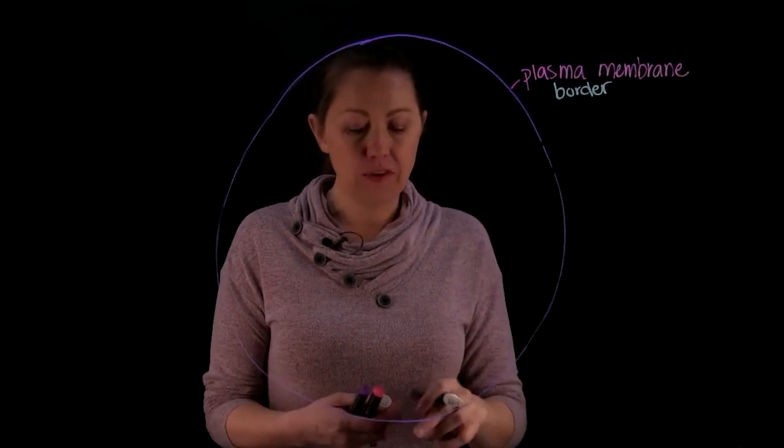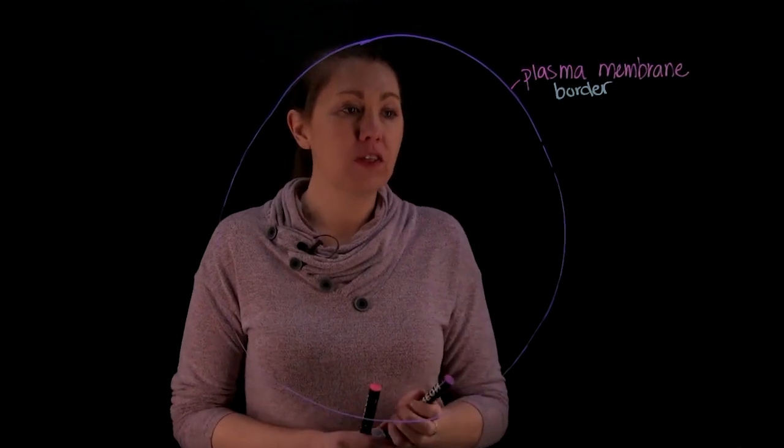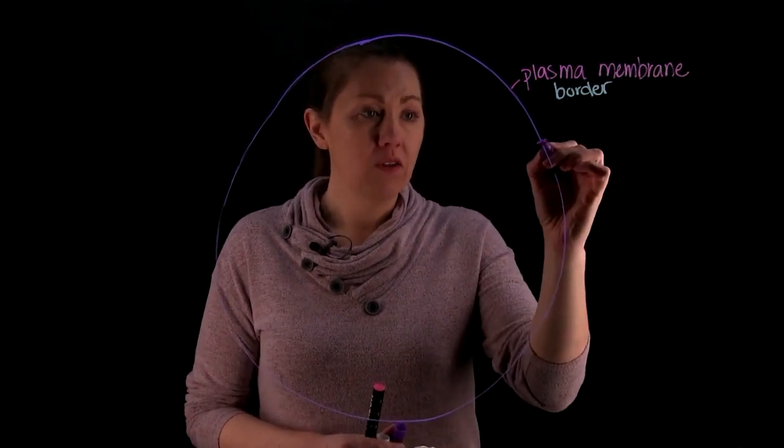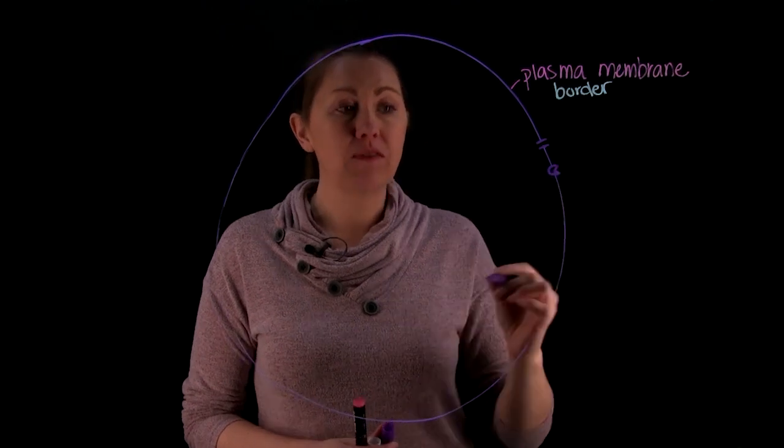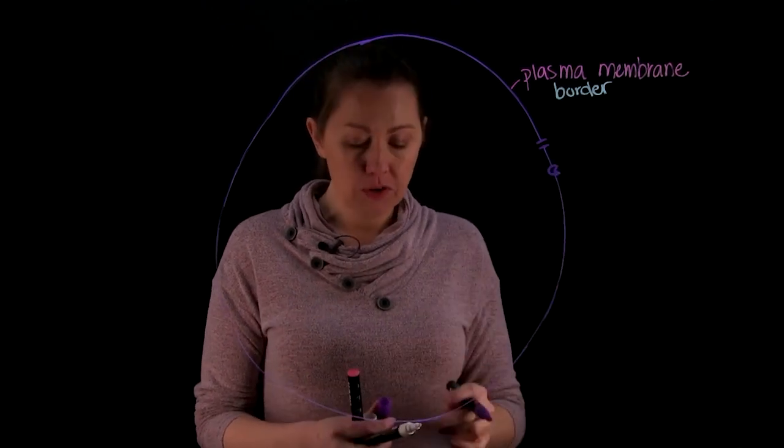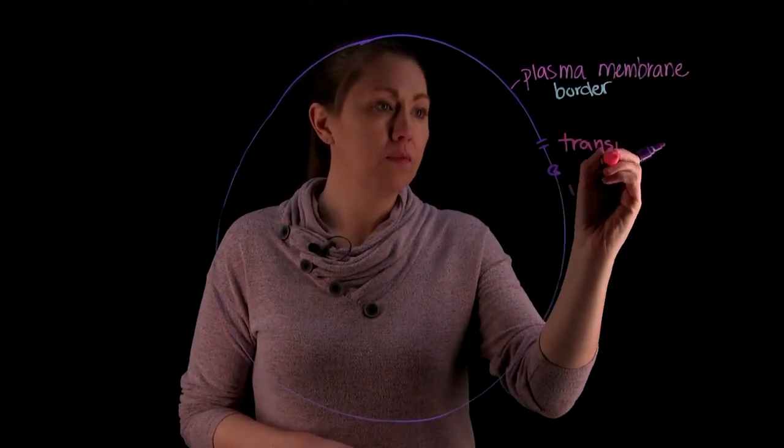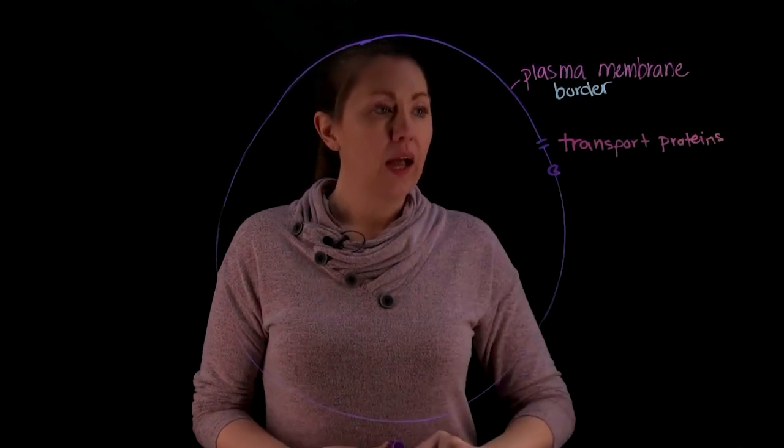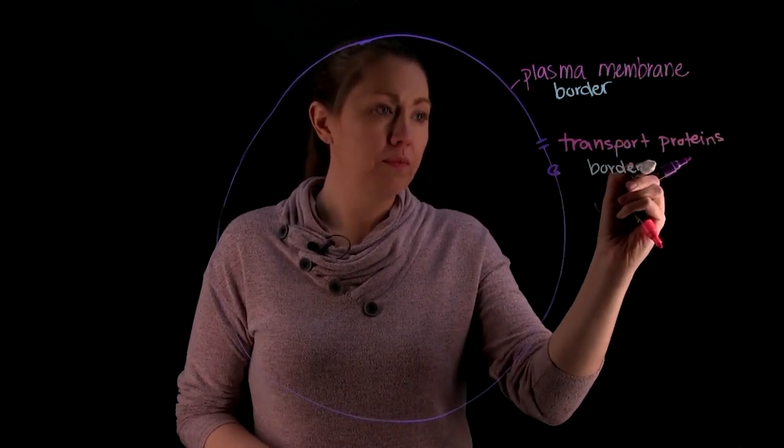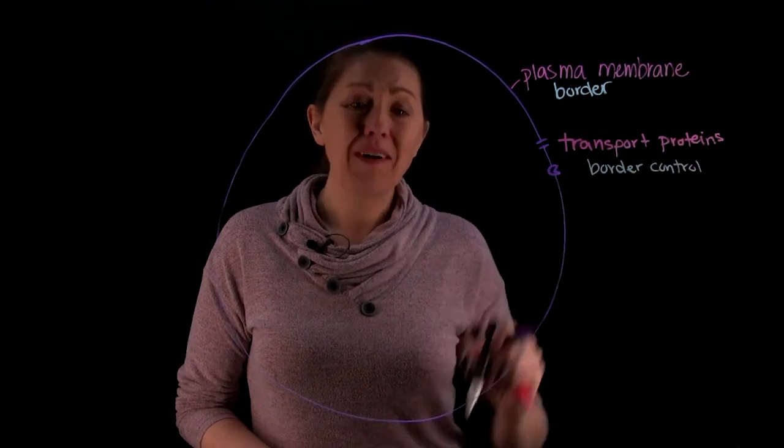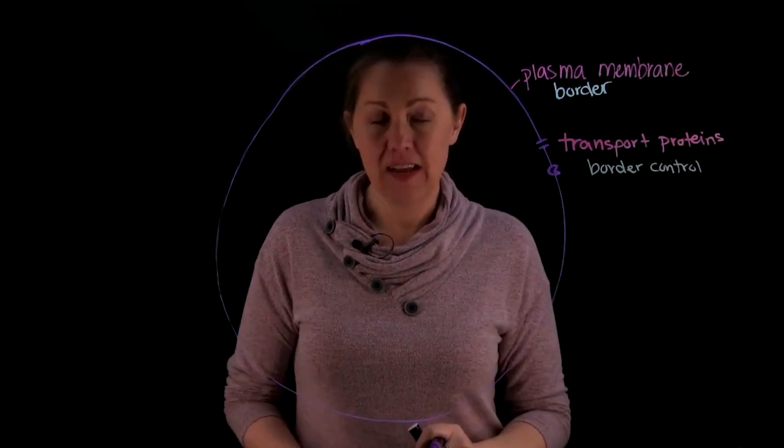Now to get into the city, you're going to have to have basically border control. There's going to be areas where it's kind of like customs, right? You're going to have to show your credentials, make sure that you're supposed to be entering, so you can have channels or you could have carriers, and you have to have the right shape to get through. So these are going to be our transport proteins, and that's going to be your border control. So you have phagocytosis for the large things that get in.